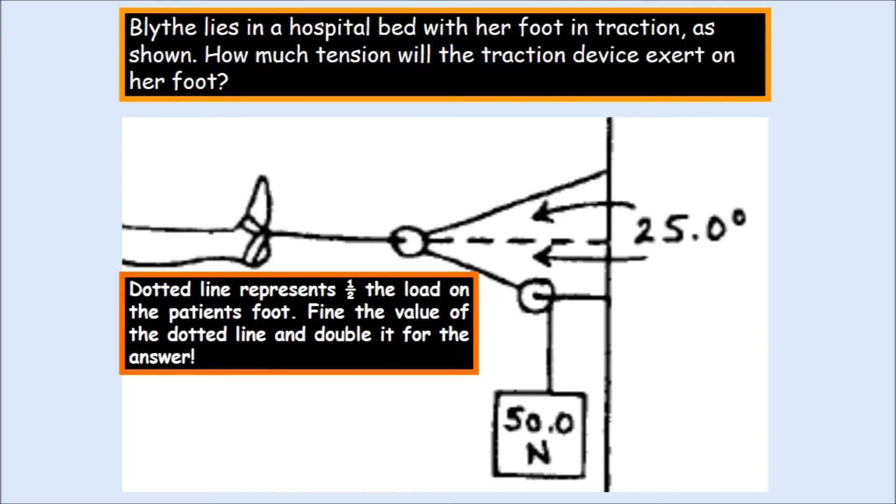Life lies in a hospital bed with her foot in traction as shown. How much tension will the traction device exert on her foot? Dotted line represents one half the load on the patient's foot. Find the value of the dotted line and double it for your answer. Well, what we're going to have to solve for here is going to be the dotted line. And then double that, and that would be the line directly coming from the foot.